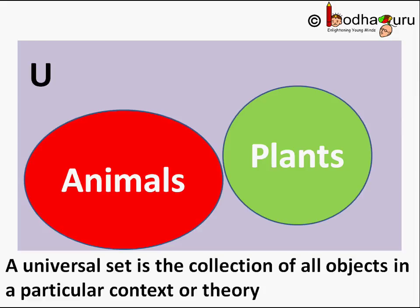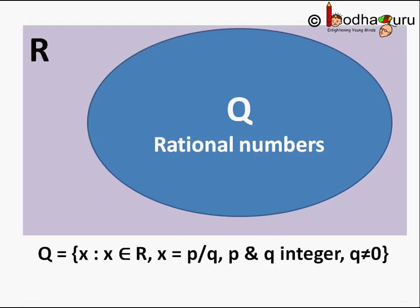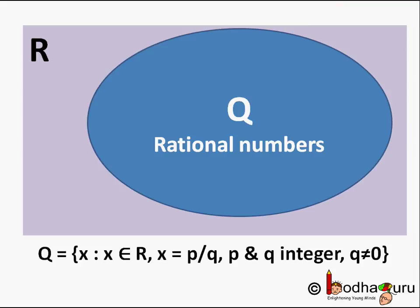Let us take another example, a set of real numbers. It has all the numbers that we use in our day to day life: integers, decimals, fractions, etc. So we can call the set of real numbers, denoted by R, a universal set.